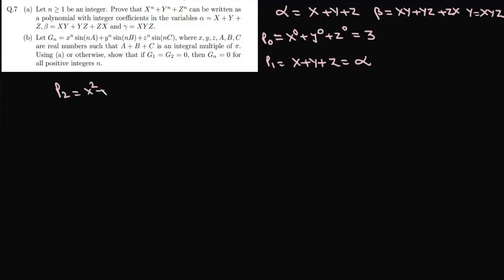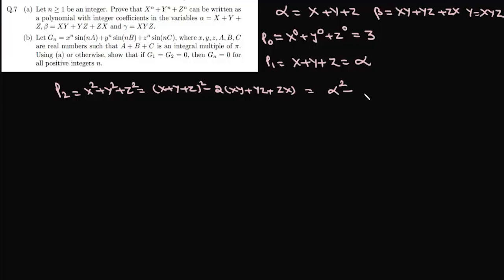Now p2 = x² + y² + z². This equals (x + y + z)² minus 2(xy + yz + zx), which is α² - 2β. This is again a polynomial with integer coefficients in α and β.